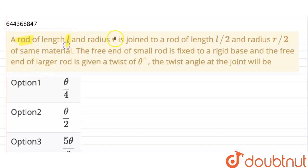A rod of length l and radius r is joined to a rod of length l/2 and radius r/2 of same material. The free end of the small rod is fixed to a rigid base and the free end of larger rod is given a twist of theta. The twist angle at the joint will be: